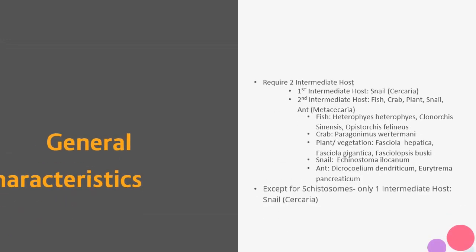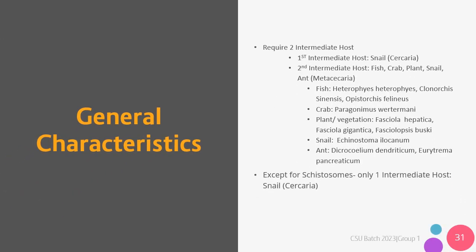There are two intermediate hosts that the flukes or trematodes require. The first intermediate host is the snail. The second intermediate hosts are the fish, crab, plant, snail, and ant. The first intermediate host, which is the snail, harbors the cercariae, and the ant, which is a second intermediate host, harbors the metacercariae. The different intermediate hosts of trematodes harbor different kinds of flukes. For Heterophyes heterophyes, Clonorchis sinensis, and Opisthorchis felineus, their intermediate host is the fish. For Paragonimus westermani, its intermediate host is the crab. For Fasciola hepatica, Fasciola gigantica, and Fasciolopsis buski, their intermediate host is the plant.